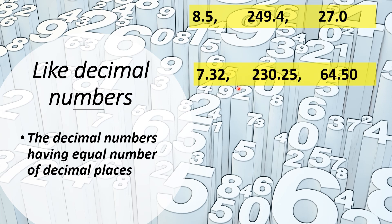Let's see another set of examples: 7.32, 230.25, and 64.50. In this set, you can also see two digits in the decimal places — 3, 2 then 2, 5 then 5, 0. Just two decimal places are here, so this is also an example of like decimal numbers.